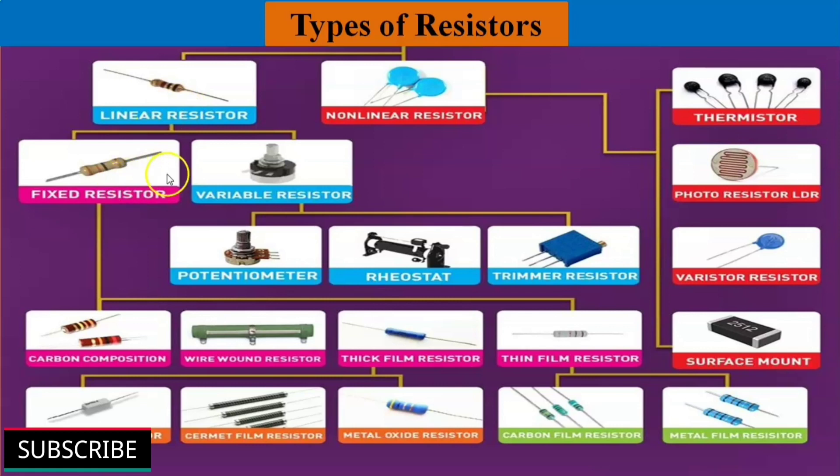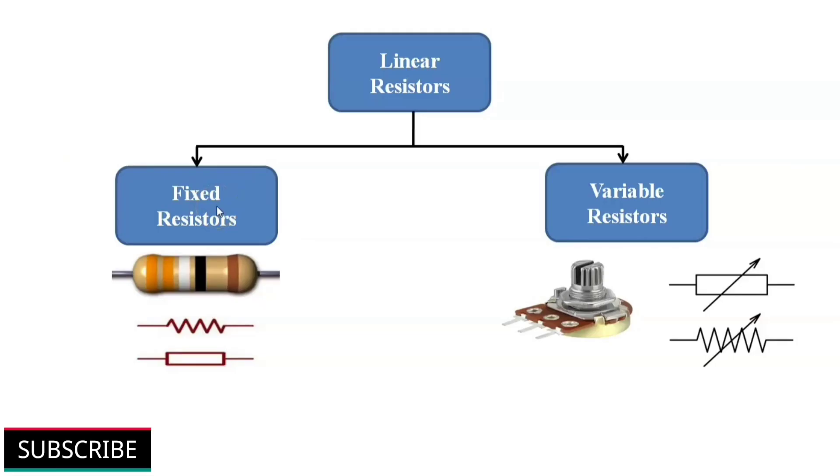Now the linear resistors. There are two basic types of linear resistors, namely fixed resistors and variable resistors. Fixed resistors, as the name says, its resistance value is fixed. Fixed resistors are the most widely used in electronic circuits.